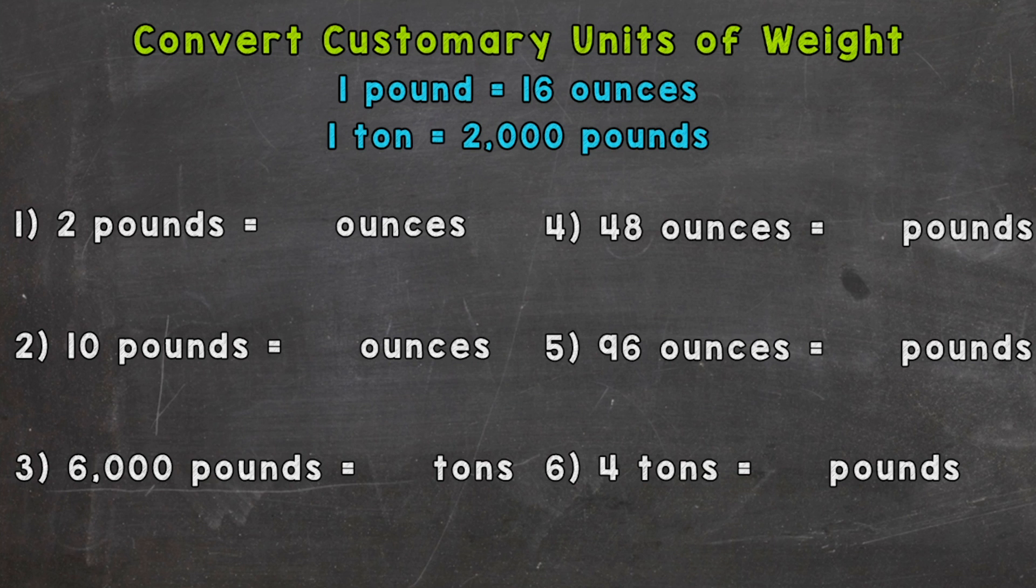So let's jump right into number one here where we have 2 pounds equals how many ounces. Let's look up here, we know 1 pound equals 16 ounces, so we have two of them, so 16 plus 16, or we can just do 2 times 16 which gives us 32 ounces.